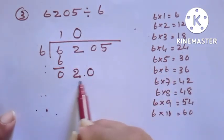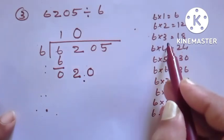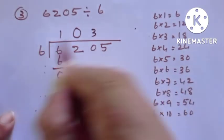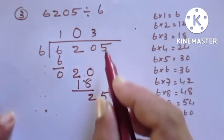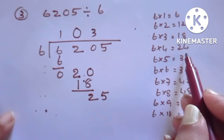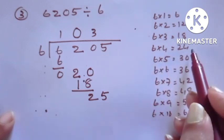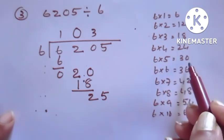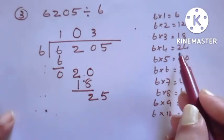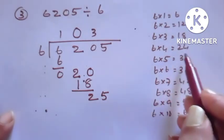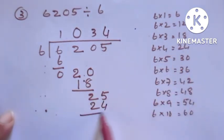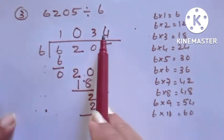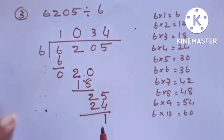After putting 0 in the quotient, we write down the next digit. Now the number is 20. 20 goes 3 times: 6 threes are 18. Subtracting gives 2. Bring down 5, so now we have 25. 6 fours are 24 and 6 fives are 30 — 30 is greater, so we take 24. Write 4 in the quotient. 6 fours are 24. Subtracting gives 1. The quotient is 1034 and the remainder is 1.